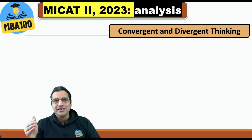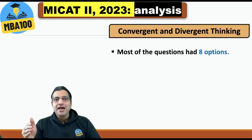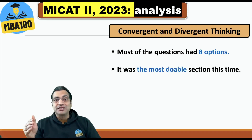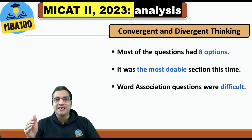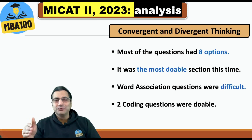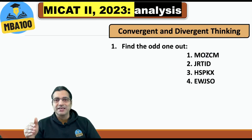There is no sectional time limit in this test. Most questions had eight options, but it was the most doable section this time. Word association questions were difficult, but two coding questions were quite doable — and we are going to see those questions here.